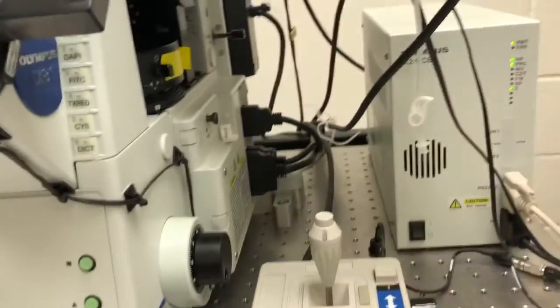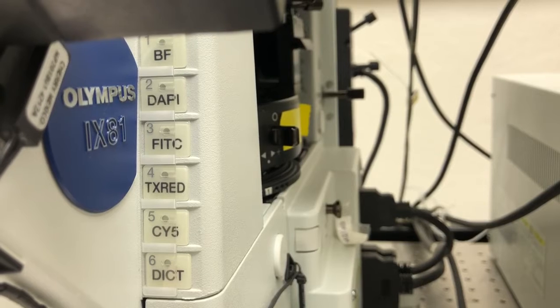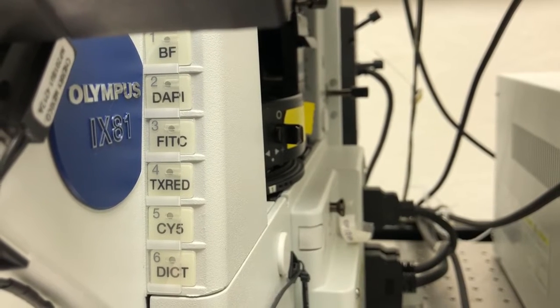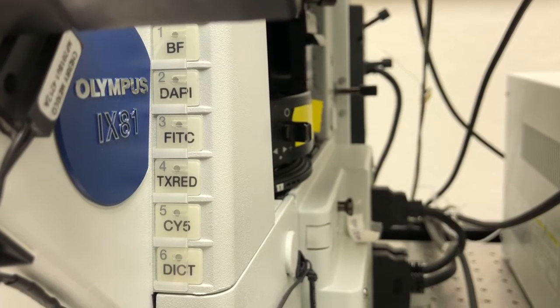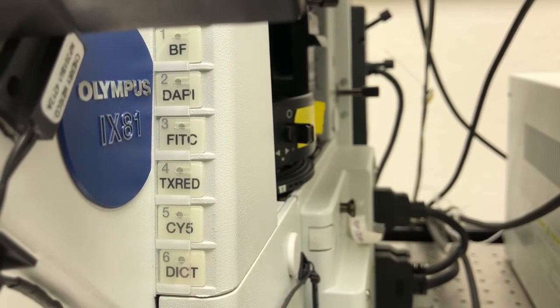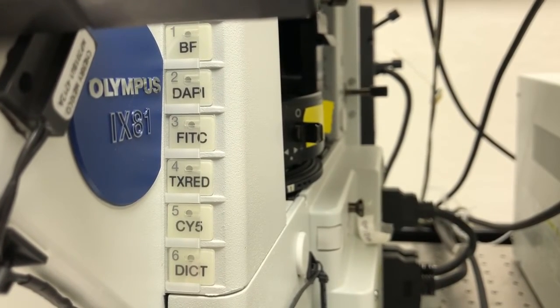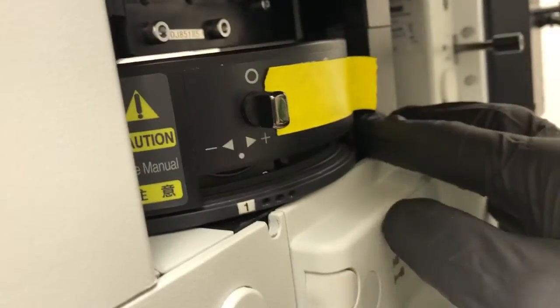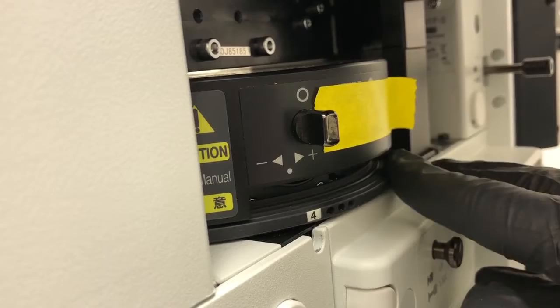We need to make sure that we are using the proper filter cube. If you look here, you'll see the different options. Filter cube two, three, four, and five are for fluorescence illumination. Let's say we want to look at a fluorophore that is in the Texas red range. That means we need to set up the turret to position four. So I'm going to go to the turret here and rotate this until we get to position four.